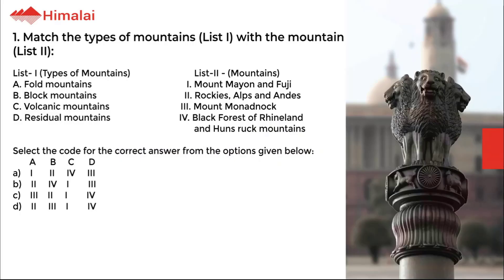Question number 1. Match the types of mountains in List 1 with the mountain in List 2. List 1: A. Fold mountains, B. Block mountains, C. Volcanic mountains, D. Residual mountains.